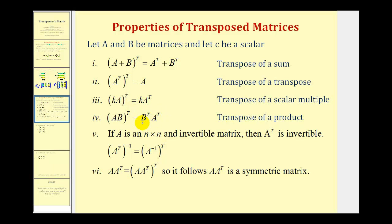Remember, matrix multiplication is not commutative, so it is important to recognize that in property four the order of multiplication is changing. Property five: if A is an invertible n by n matrix, then the transpose of matrix A is also invertible, and the inverse of the transpose of matrix A equals the transpose of the inverse of matrix A. The last property: matrix A times the transpose of matrix A equals the transpose of matrix A times matrix A, and since these are equal, A times the transpose of A is a symmetric matrix — meaning if we take this product and find its transpose, it will be the same matrix.